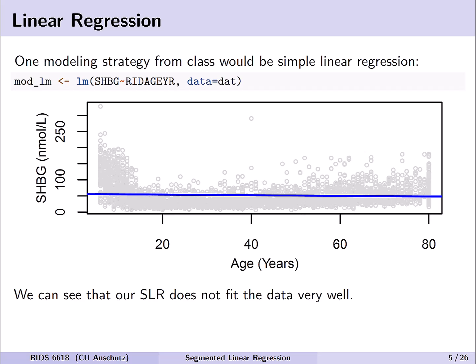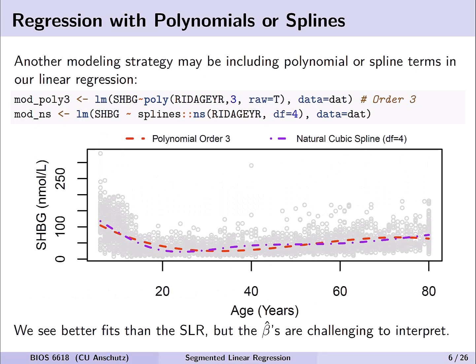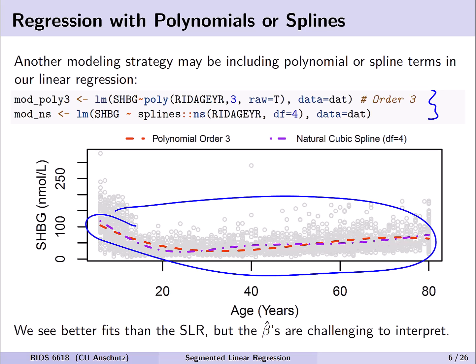One approach would be to use non-linear trends for age — for example, fitting polynomials or splines. We see examples of a cubic polynomial or a natural cubic spline with four degrees of freedom, and in both cases the data is much better fit. However, the beta coefficients can be very challenging to interpret, making it hard to get meaningful findings about the trends over time or ages.